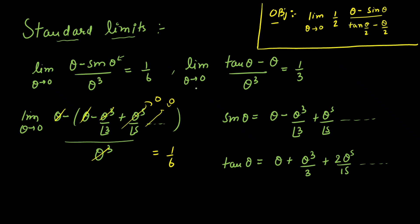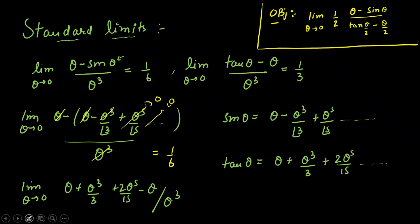For the second standard limit, lim(θ→0) (tanθ − θ)/θ³: substituting the expansion, θ cancels, the θ³/3 term gives coefficient 1/3, and higher-order terms vanish as θ→0. So lim(θ→0) (tanθ − θ)/θ³ = 1/3. I've now proved both standard limits — 1/6 and 1/3 — and will use them to compute our main limit.